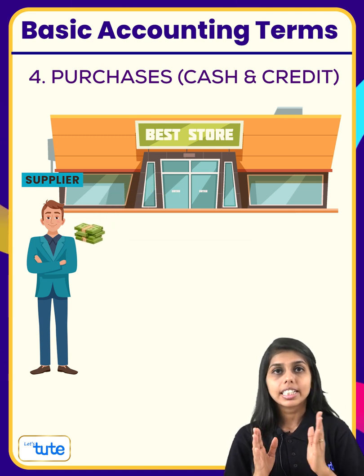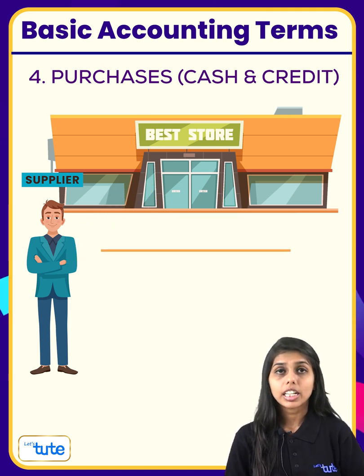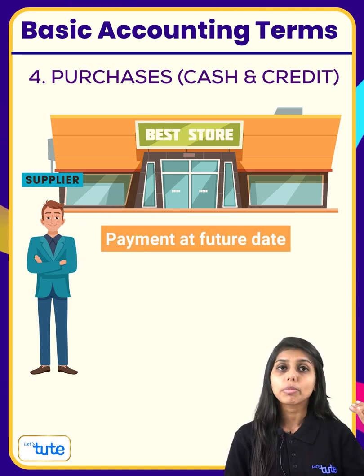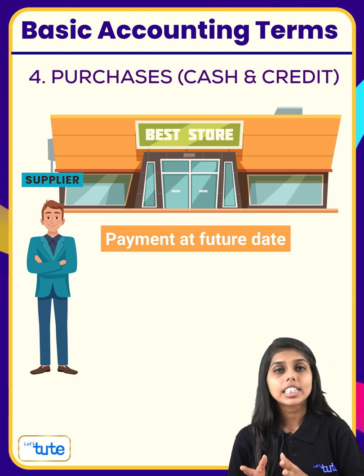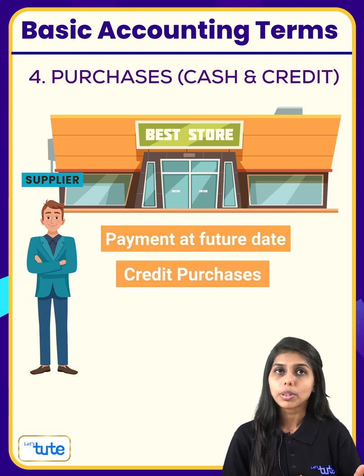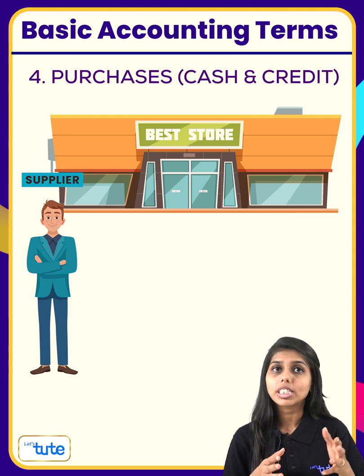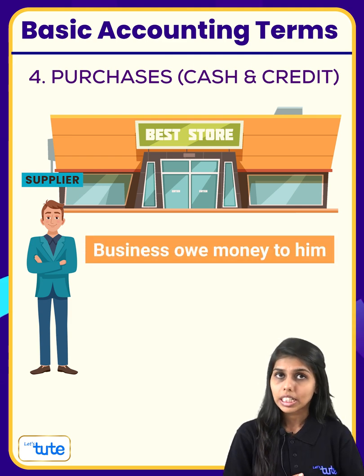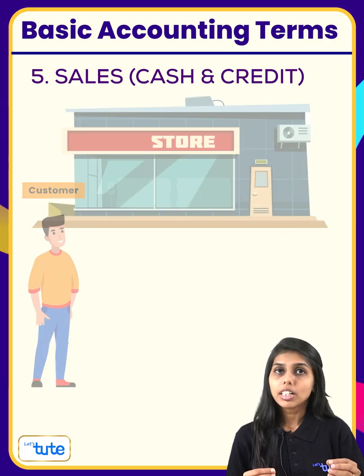If the payment is to be made at a future date — say after 30 days — it is known as credit purchases. The supplier to whom the business owes money is a creditor.